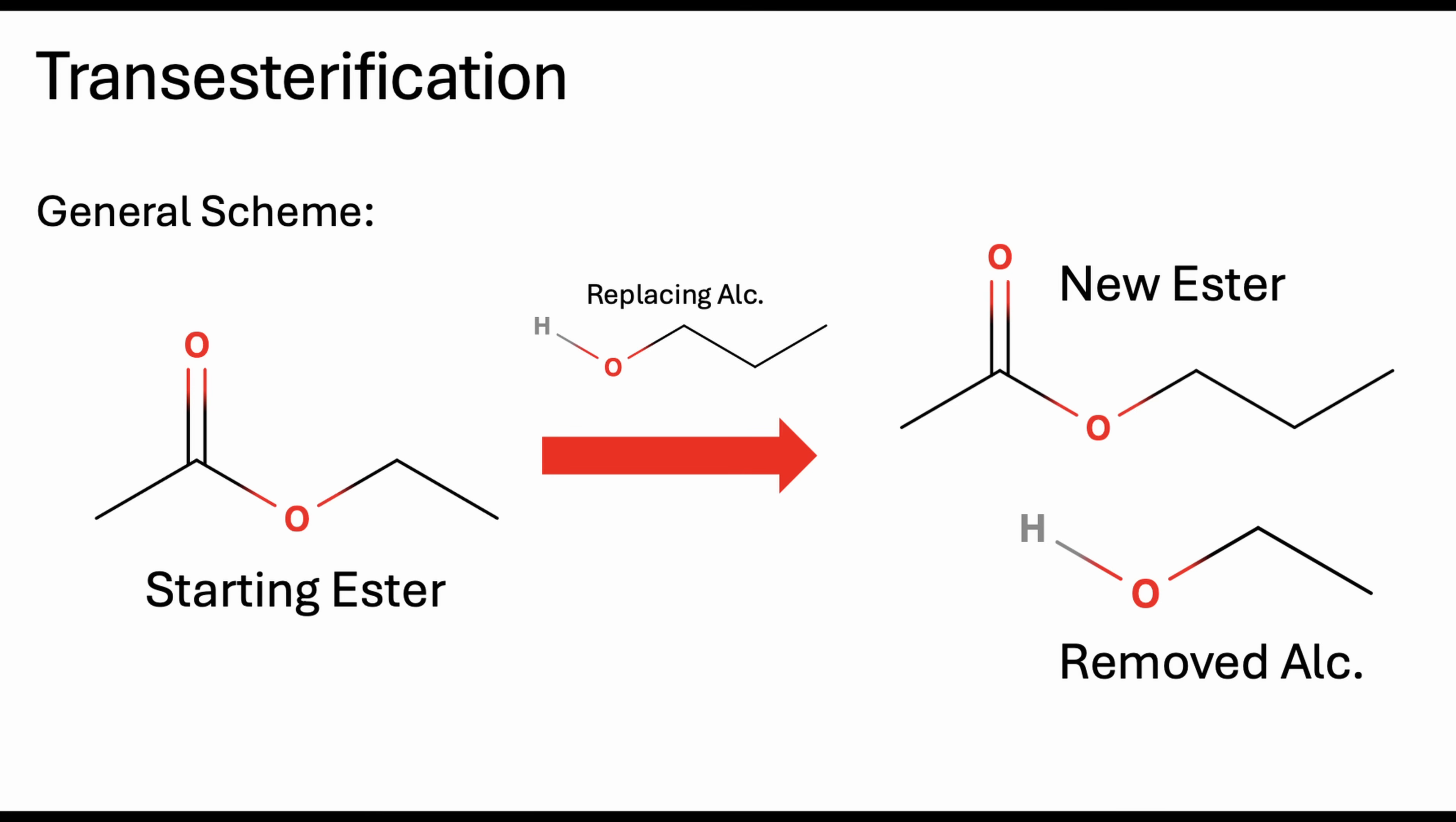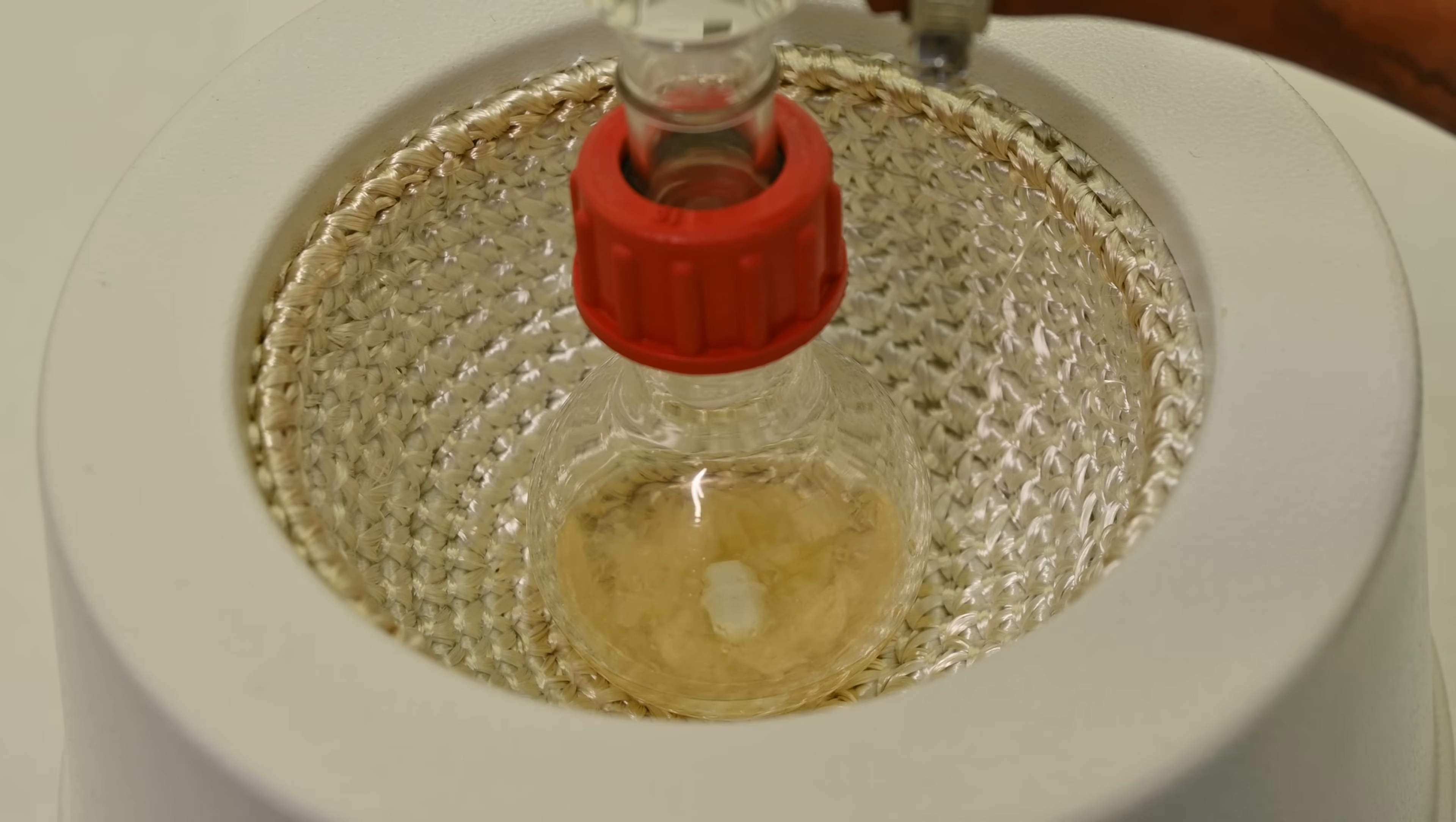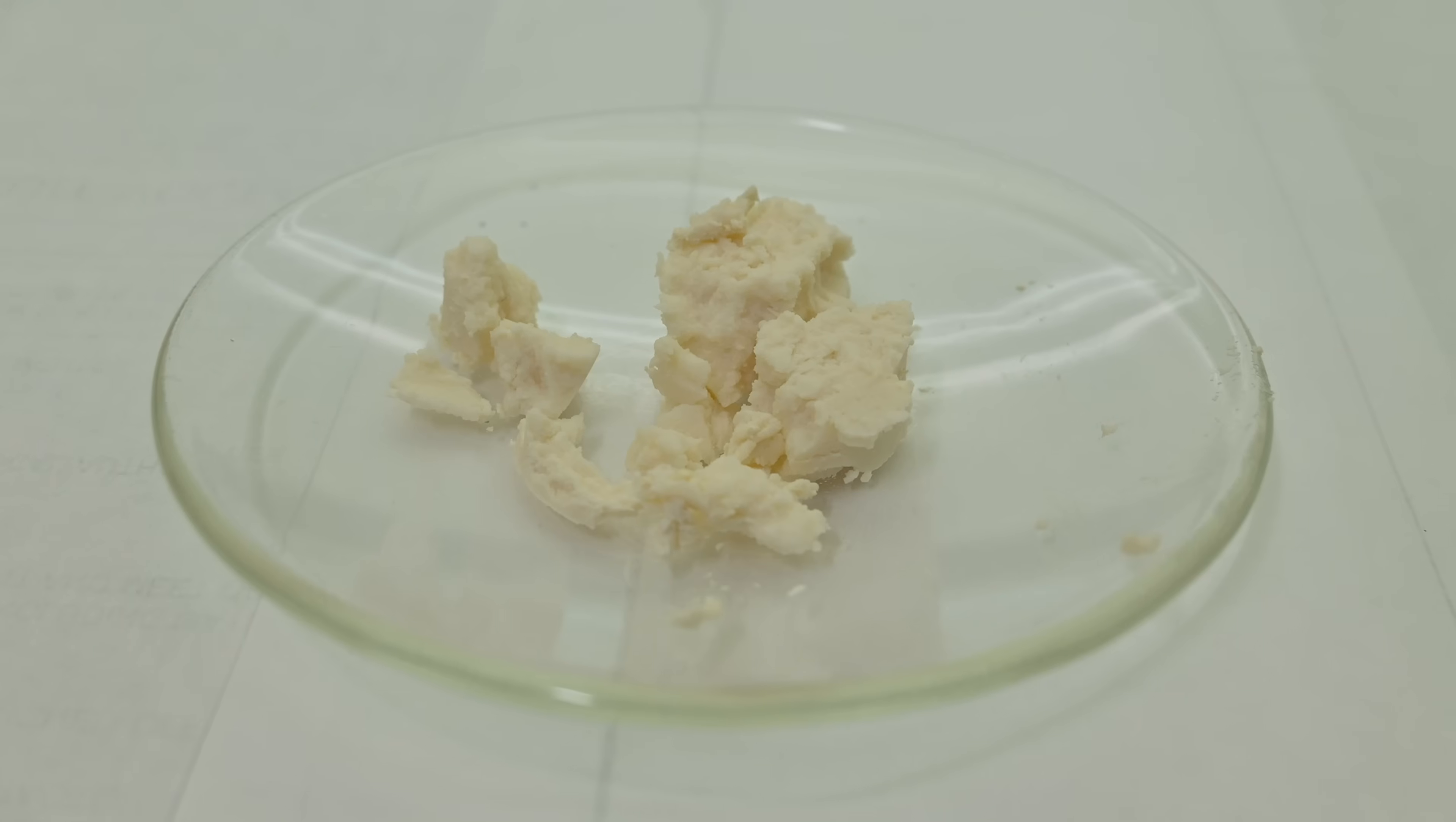Now let's talk about transesterification, a reaction in which the alcohol part of an ester is swapped out for another alcohol. My initial approach was straightforward. I tried a basic environment using sodium ethoxide formed by reacting sodium metal with ethanol, then refluxing this mixture with benzocaine and diethylamino ethanol. Unfortunately this reaction didn't produce novocaine effectively or at all. Instead a sodium salt was formed of the para-aminobenzoic acid.